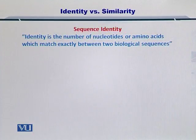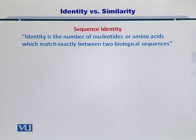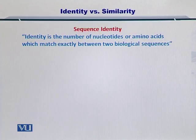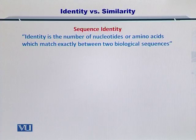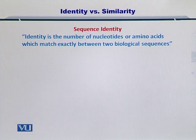To begin with, I will talk about identity, or sequence identity as it is called. Sequence identity is the number of nucleotides — in the case of DNA or RNA — or amino acids — in the case of proteins — which match exactly between two sequences. We can count how many nucleotides are in each, look at which types are present, and also examine their arrangement.